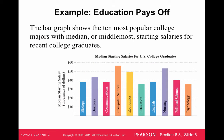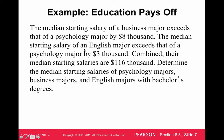The bar graph below shows the 10 most popular college majors with median starting salaries for recent college graduates — median is the middle salary. Computer science is the highest, nursing is the next highest, and so on. The problem says: the median starting salary of a business major exceeds that of a psychology major by $8,000. The median starting salary for an English major exceeds that of a psychology major by $3,000. Combined, their median starting salaries are $116,000. Determine the median starting salaries of each major.